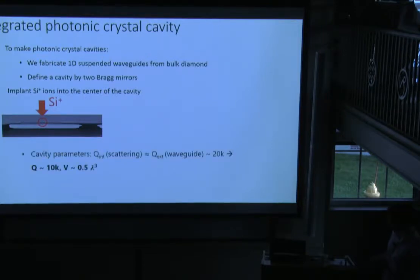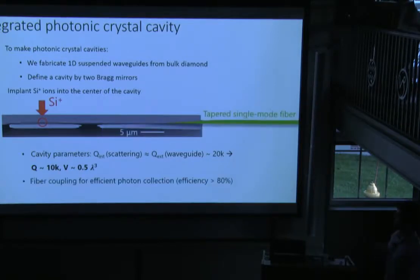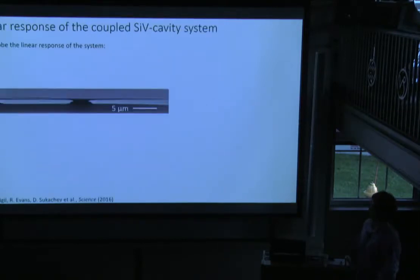Our devices have a quality factor of about ten thousand and mode volume slightly lower than lambda cubed. To increase collection efficiency of photons, we can couple tapered optical fibers. This allows us to collect more than 80% of the photons from the cavity to the fiber.